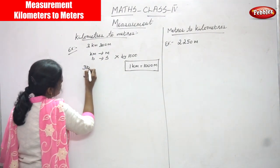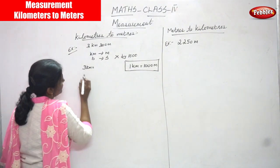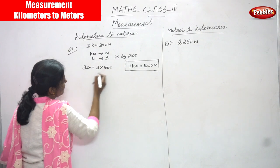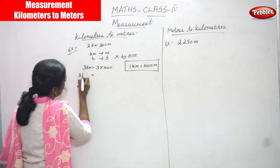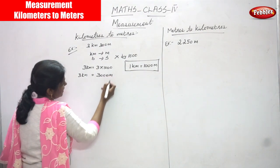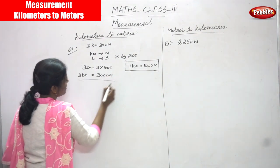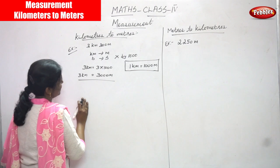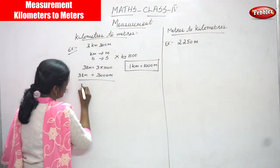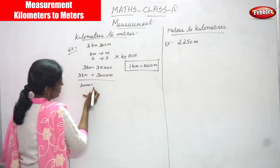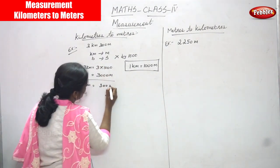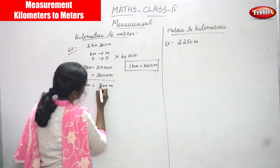So 3 kilometers — what are you going to do? First you have to convert 3 kilometers. So 3 into 1000, what will you get? That means 3 kilometers becomes 3000 meters. Then what you are going to do? You have to add the 300 meters also. So 300 meters is already given.